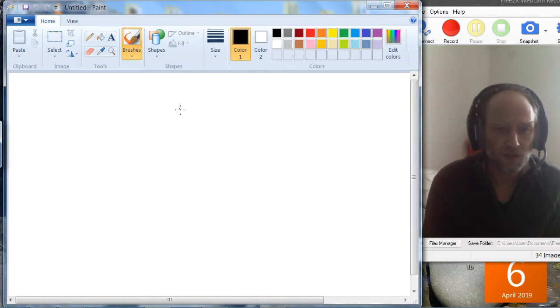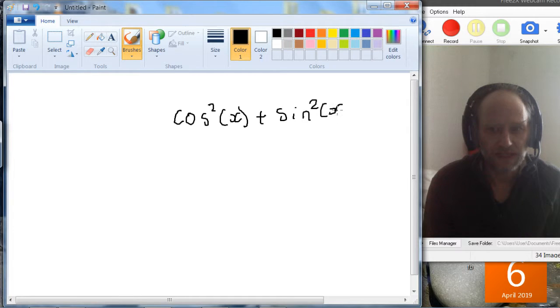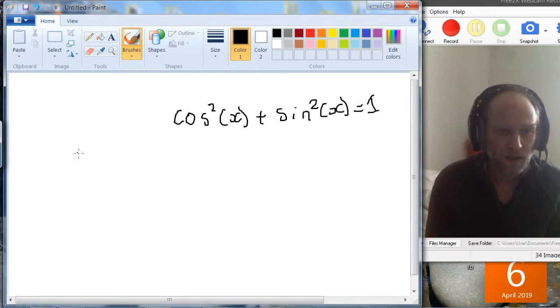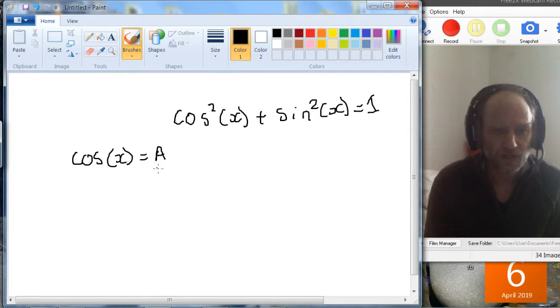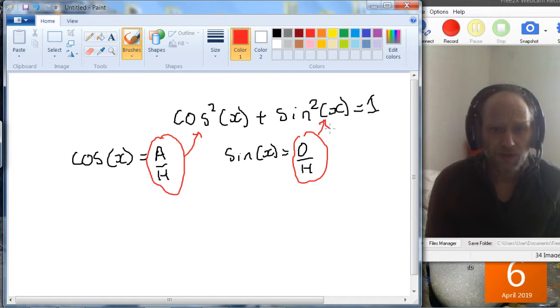So in the last video we worked out that cos²(x) + sin²(x) = 1. So cos(x) is adjacent over hypotenuse and sin(x) is the opposite over hypotenuse. So let's plug these values into this equation.